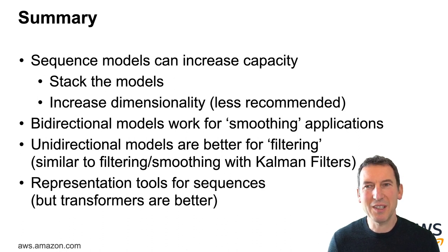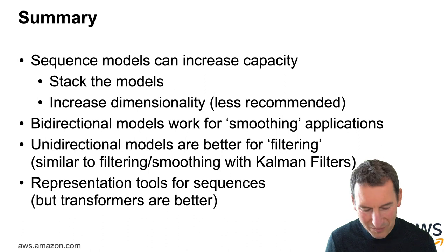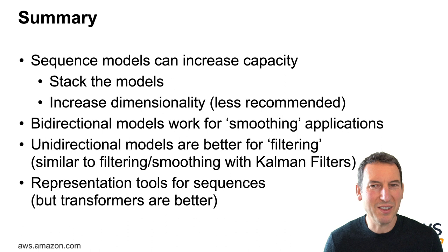Bidirectional models are really nice for smoothing applications. And then, yes, there are good tools to use RNNs to get representations, let's say, of sentences for sentiment estimation and so on. Turns out transformers are better.